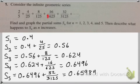So when we find the partial sums, the sum of the first term is 0.4. The sum of the first two terms is 0.56. First three is 0.624. Then 0.6496. Then 0.6598.